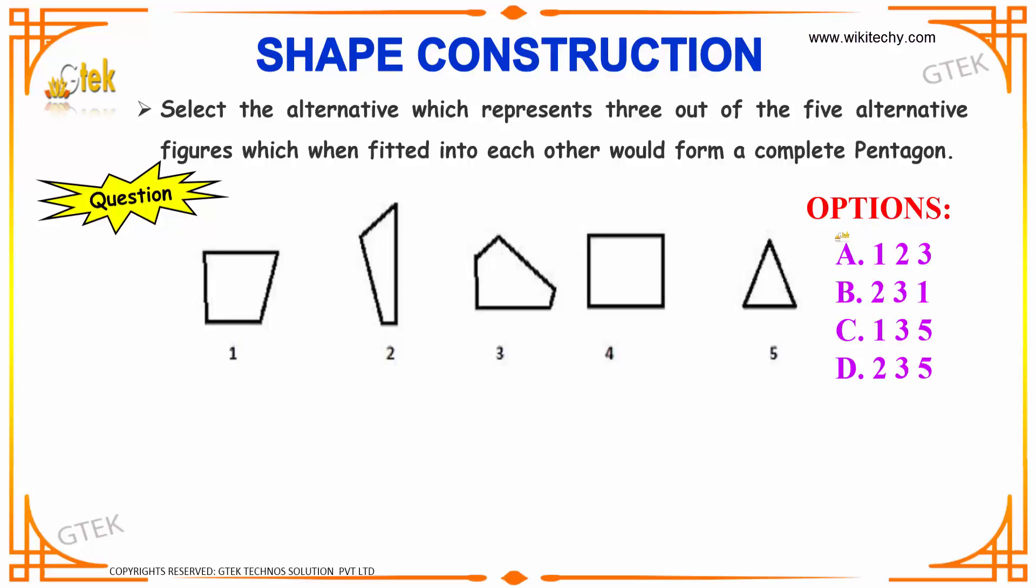We have our options as: A: 1, 2, 3; B: 2, 3, 1; C: 1, 3, 5; and D: 2, 3, 5.